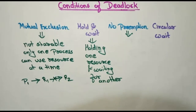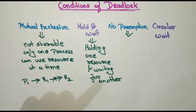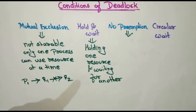No preemption is the third condition. Preemption means that when one process completes its work, it can release resources so another process can take them. No preemption means a resource can only be released voluntarily by the process itself — it cannot be forcibly taken away.